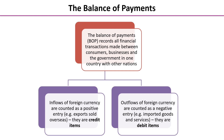Inflows of foreign currency into the country in question count as positive entries — they're credit items. And outflows of foreign currency are counted as negative entries — they're debit items.